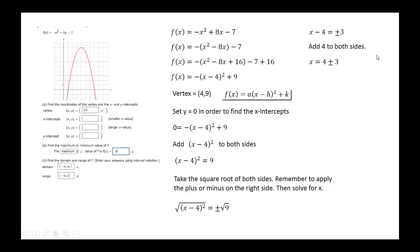Add 4 to both sides, which results in x equal to 4 plus or minus 3. This is two values: x equal to 4 plus 3, which is 7, or x equal to 4 minus 3, which is 1.